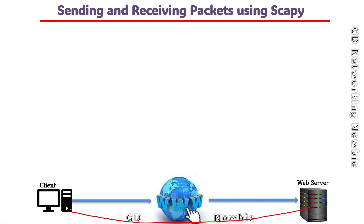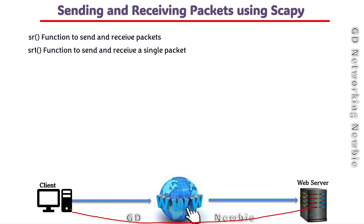We'll see some functions used for sending as well as receiving. The first function is 'sr', which stands for send and receive — it is used to send and receive packets in Scapy, and it works for network-layer packets. Then there is 'sr1', which is a function to send and receive a single packet. Both sr and sr1 are used to send layer 3 packets, for example IP, ICMP, ARP, and some other protocols.